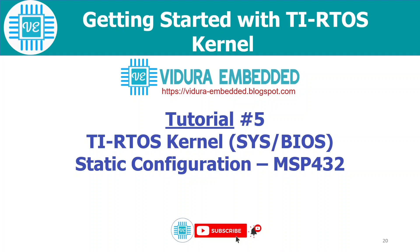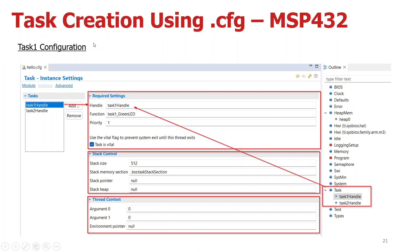In this tutorial I'm going to show you how we can configure the TI RTOS kernel using a static method. As I mentioned, there are three ways to create TI RTOS kernel objects. I will focus one or two video tutorials on static configuration for both MSP432 and TI VASI, and the remaining tutorials will focus on dynamic creation. The basic thing for every RTOS is task creation, and we'll use the dot config file with the GUI method to create objects statically.